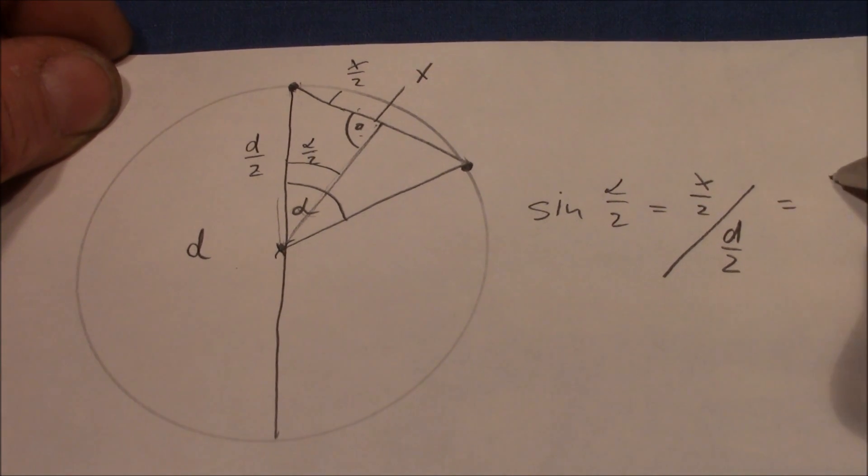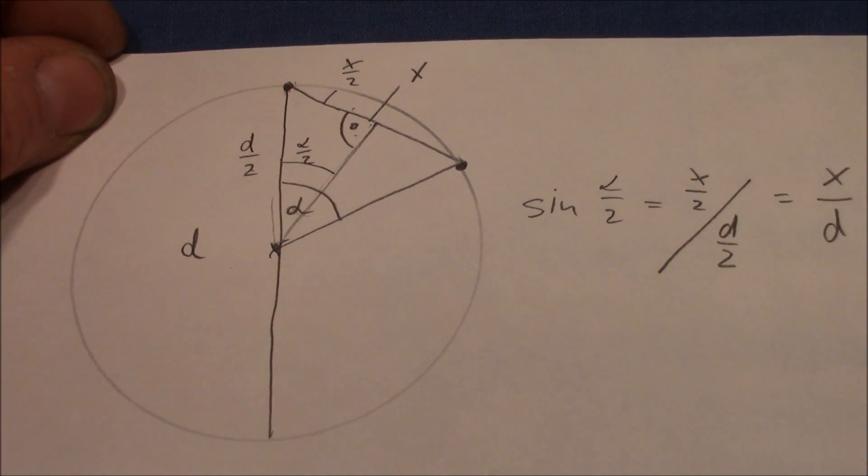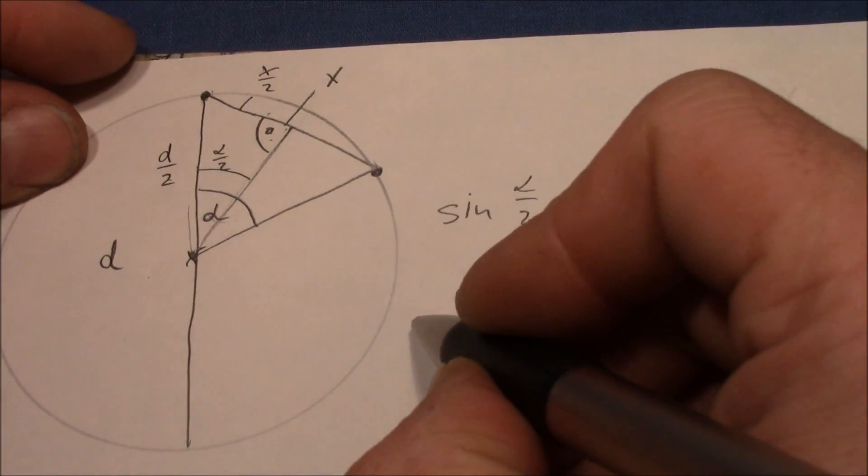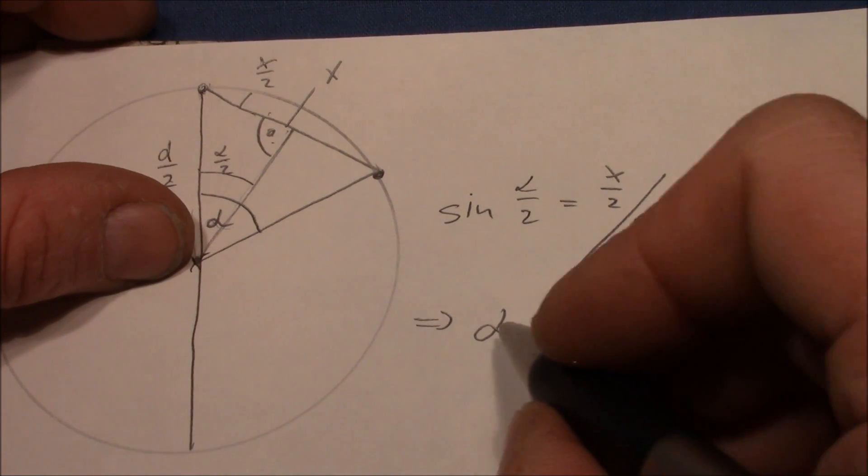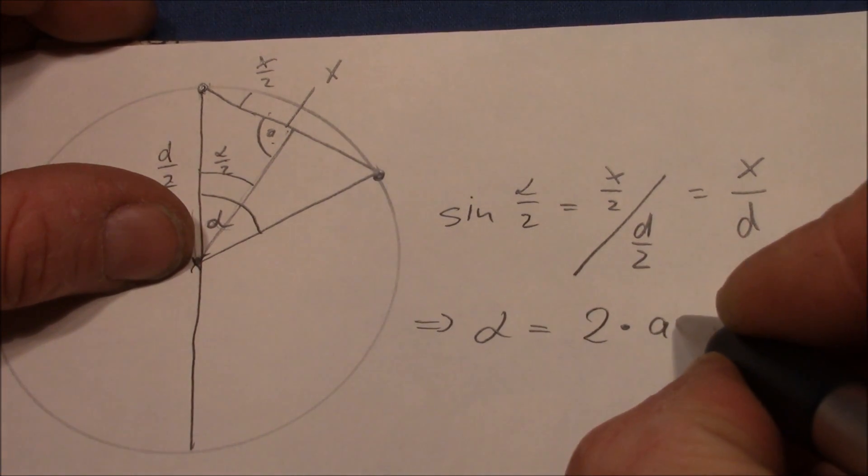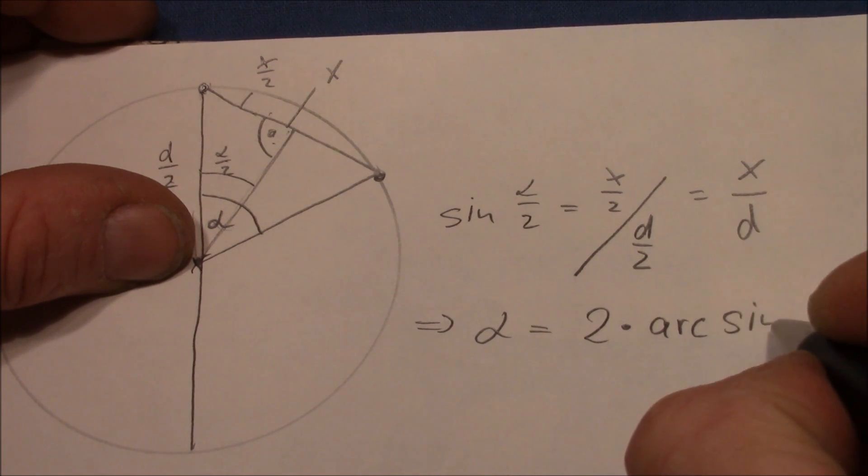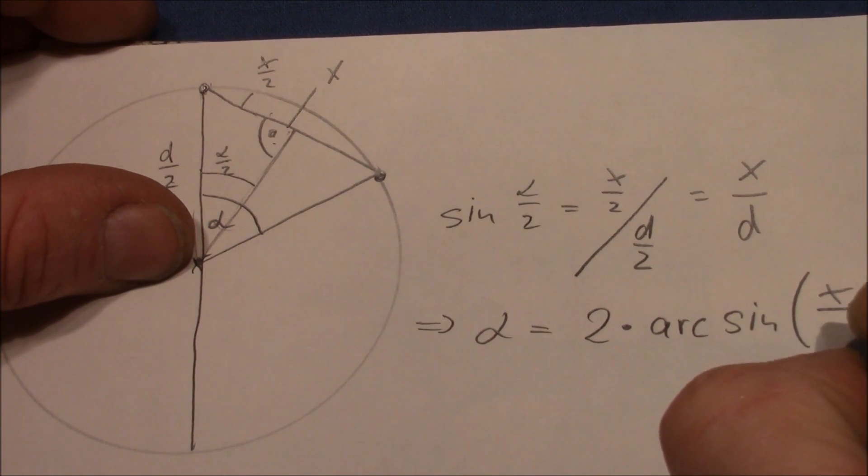And this equals to x divided by d. So therewith you simply solve this equation and get alpha is twice the inverse sinus of x divided by d. So here we go.